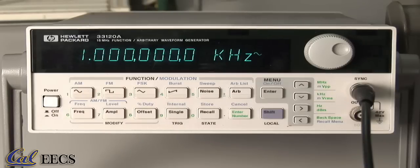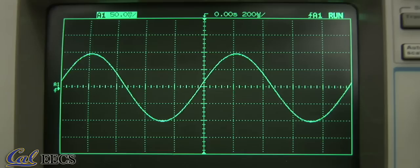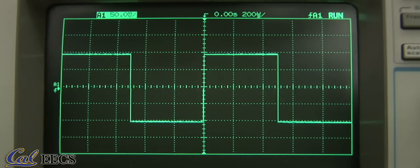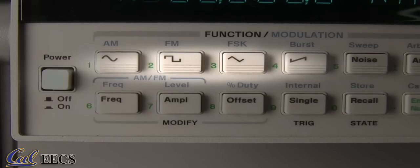Most of the work you will be doing will use sine waves, but the function generator can produce other waves as well. These four buttons let you select the four main kinds of waves: a sine wave, a square wave, a triangle wave, and a ramp wave. Push the button to select which one you want.